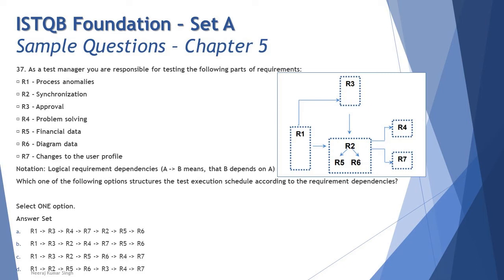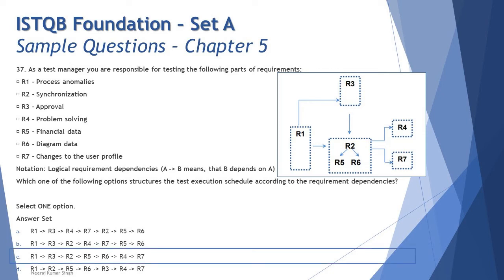Looking at the options: A says R1, R3, R4 — incorrect because you cannot go to R4 right after R3 without passing through the R2 block. B says R1, R3, R2, R4 — incorrect because R5 and R6 are part of the R2 block and must be executed before R4. D starts with R1, R2, which is wrong because R2 is also dependent on R3. The right answer is C: R1, R3, R2, R5, R6, R4, R7.